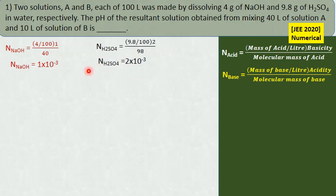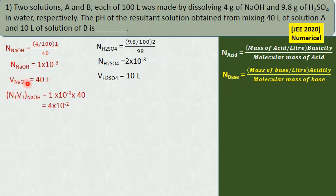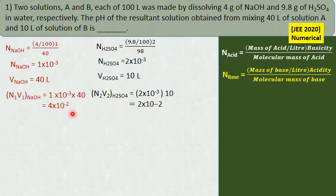We have got the concentrations as normality. Normality of acid is more than that of NaOH, but what matters is the amount of alkali and acid taken in the mixture. We take 40 liters of NaOH and 10 liters of sulfuric acid. Volume times normality gives equivalents: OH⁻ equivalents = 4×10⁻², H⁺ equivalents = 2×10⁻². Concentration of hydroxyl ion is more than H⁺, so the solution is alkaline.